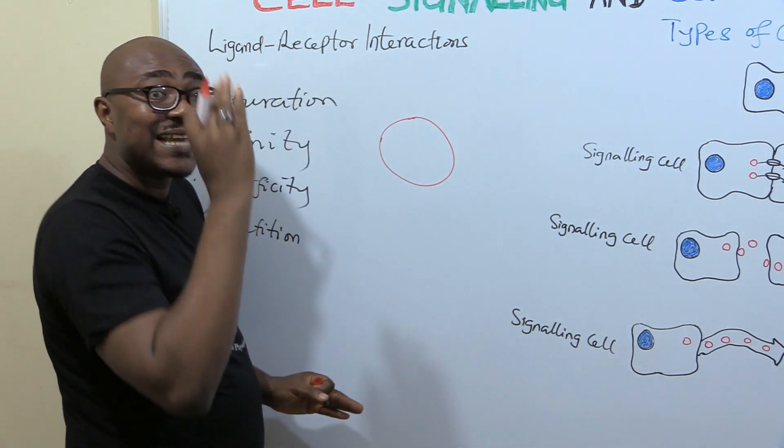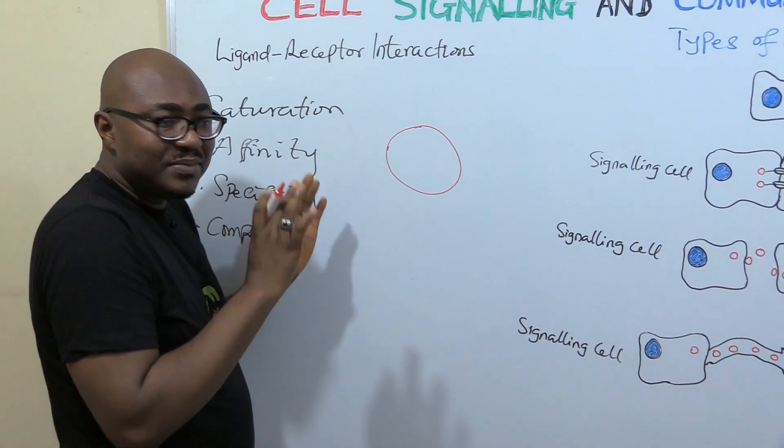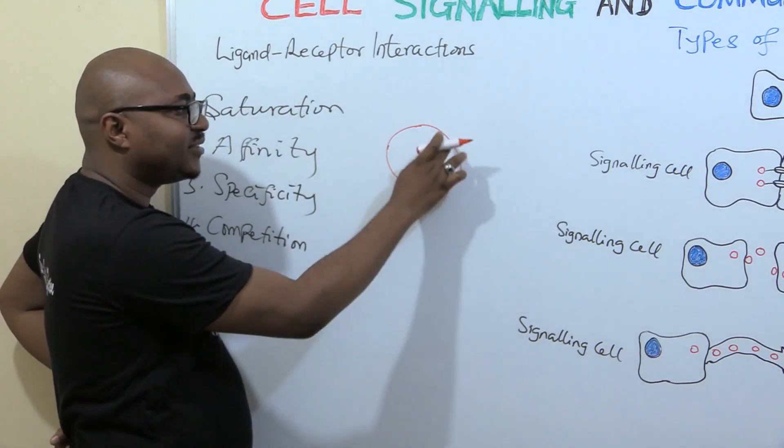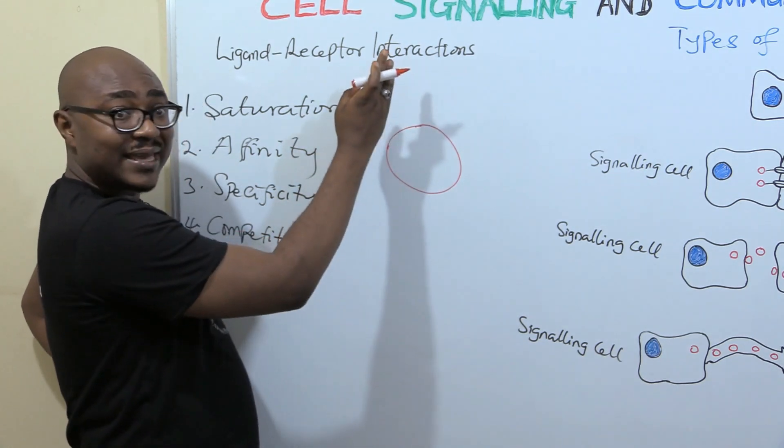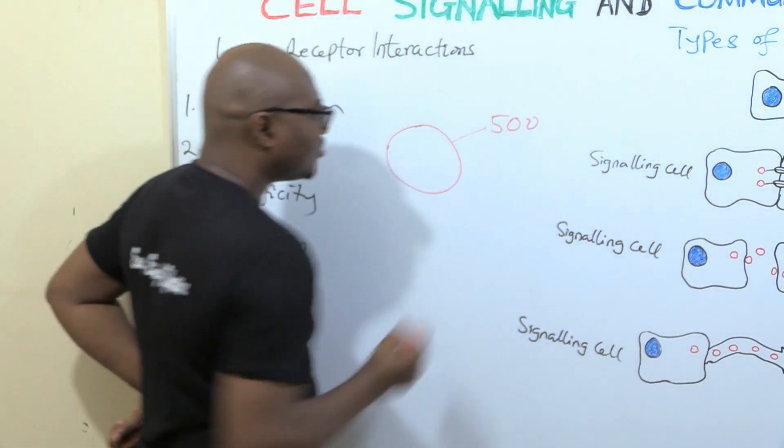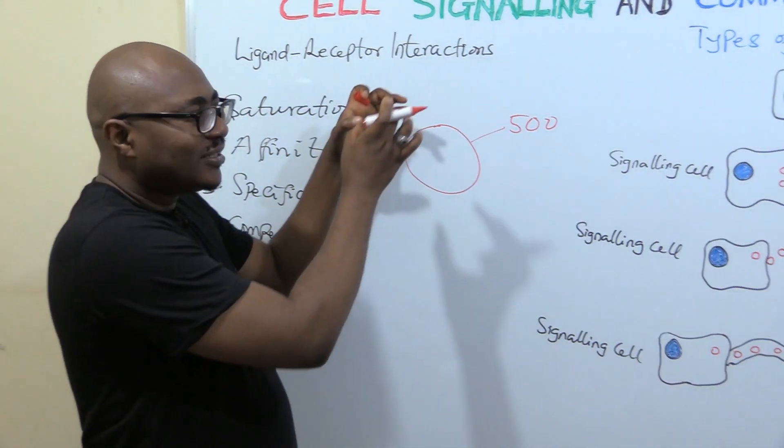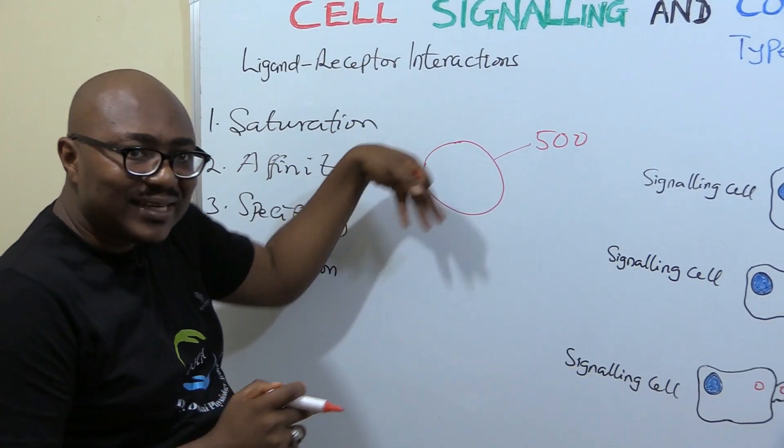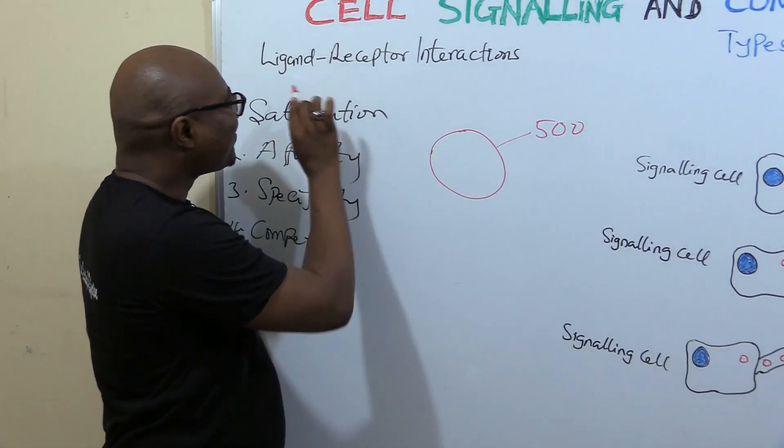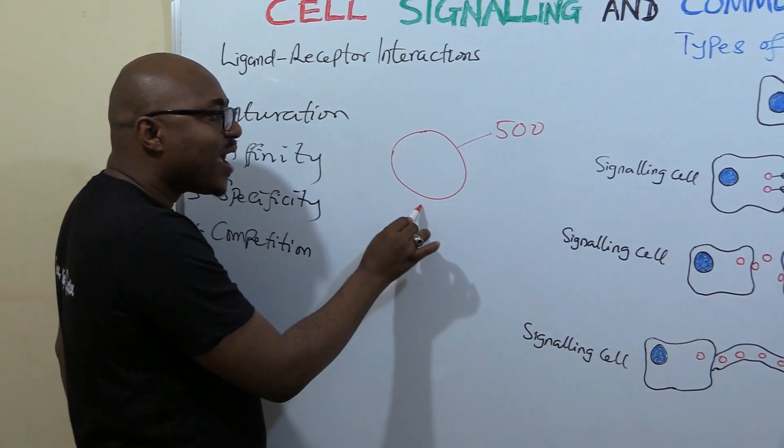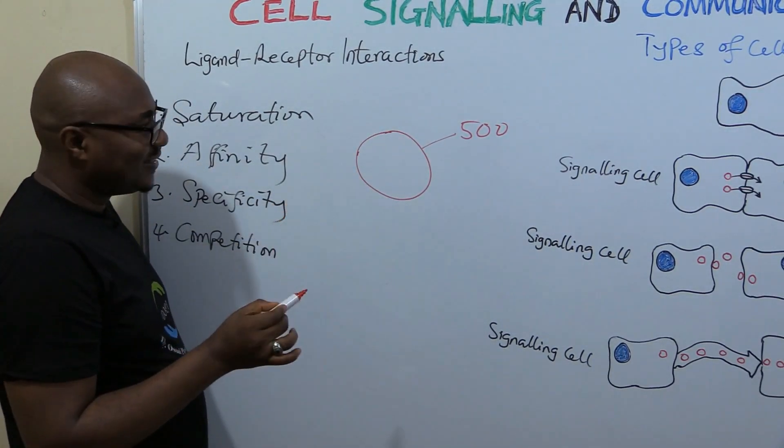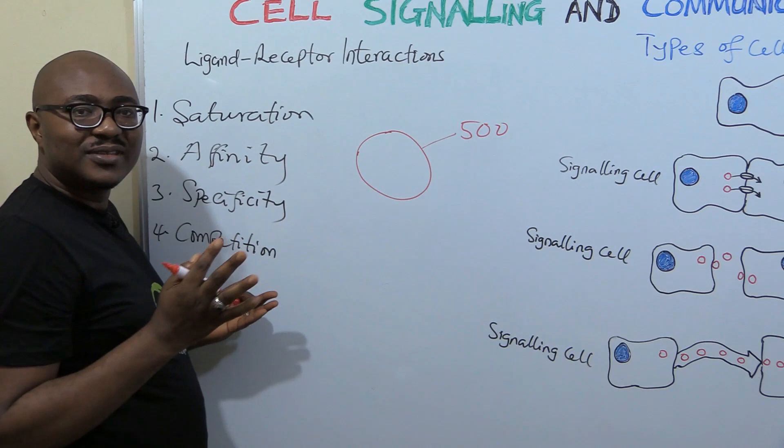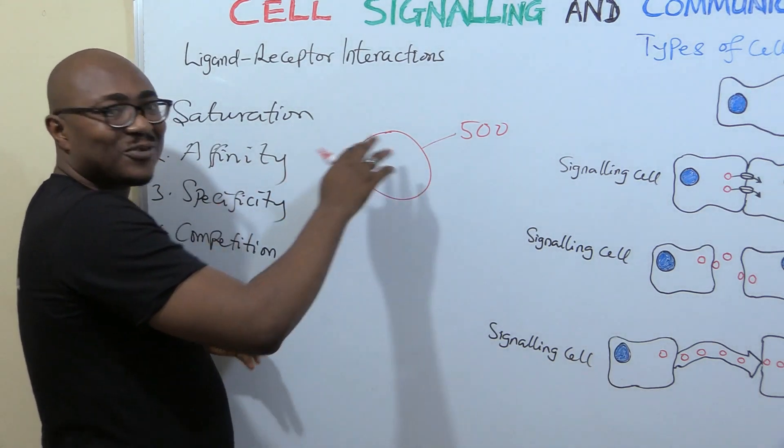Let's start with saturation. When in the cell membrane, let's say this is the cell membrane, a ligand is supposed to bind to receptors, especially for the plasma membrane kinds of receptors. What saturation is telling you is that there is a limited number of receptors that exist on the plasma membrane at any given point in time.